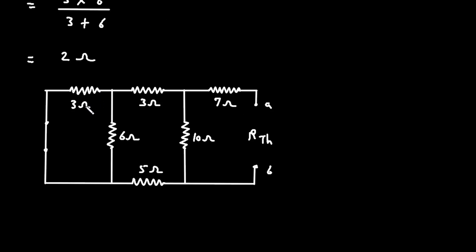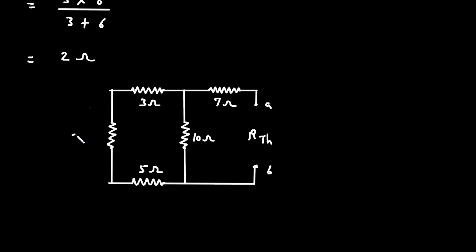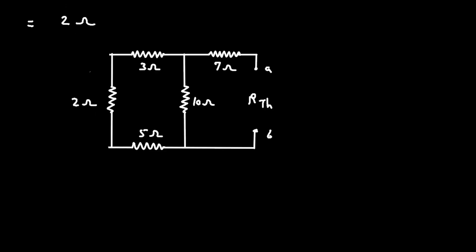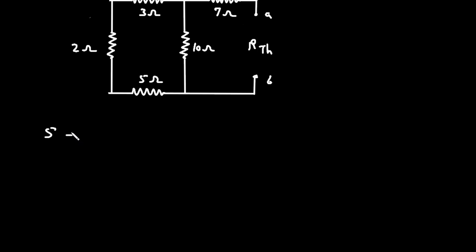We can replace this 3 Ohm and 6 Ohm by a single resistor of 2 Ohm. Now we can see 2 Ohm, 3 Ohm, and 5 Ohm are connected in series. So 5 plus 2 plus 3 equals 10 Ohm.